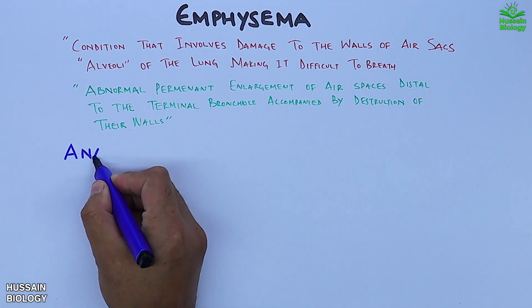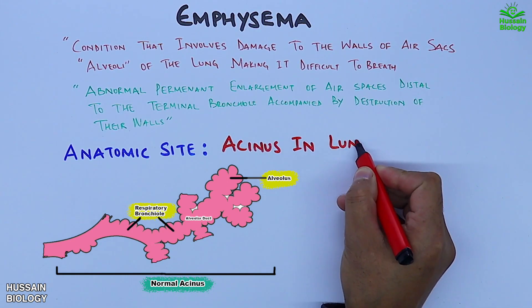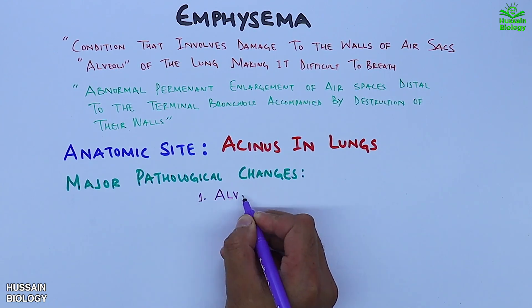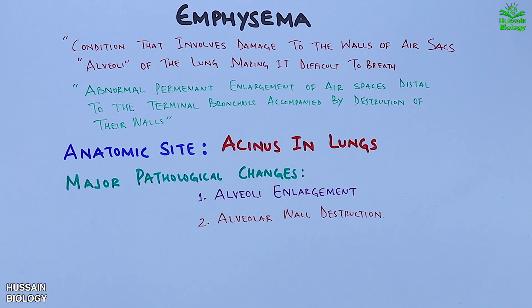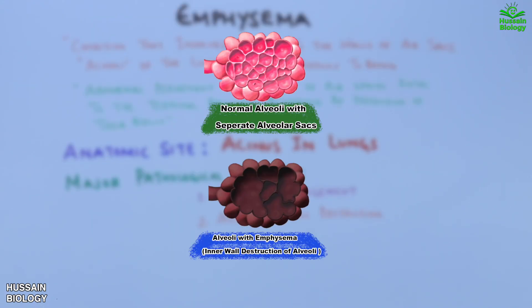The anatomic site for the condition to occur is the acinus in the lungs, shown in the diagram. In amphysema, the major pathological changes include alveolar enlargement and alveolar wall destruction. As we can see in this diagram, the normal alveoli have separate air sacs with intact walls, whereas the amphysema one has walls destructed with enlarged air spaces.